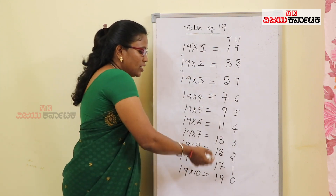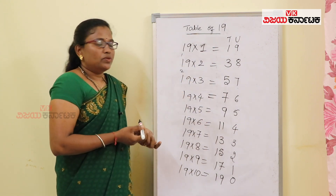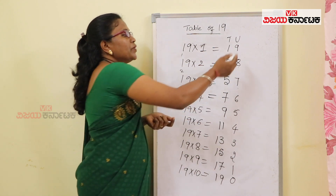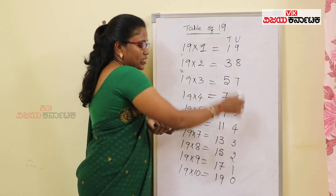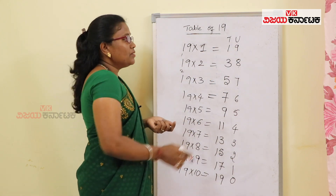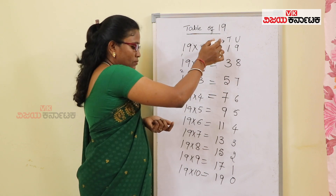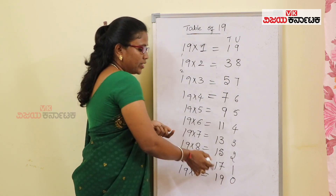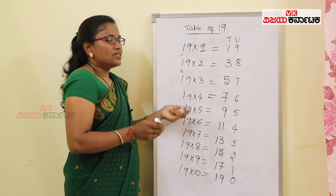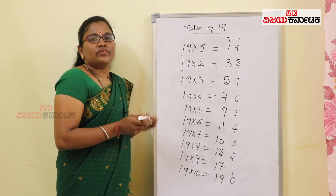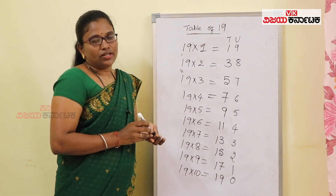So this is the method. For new multiplication, remember this trick: units place goes 9 to 0 in reverse order, tens place has odd numbers 1 to 19. So this is the easiest way to remember the 19 times table.